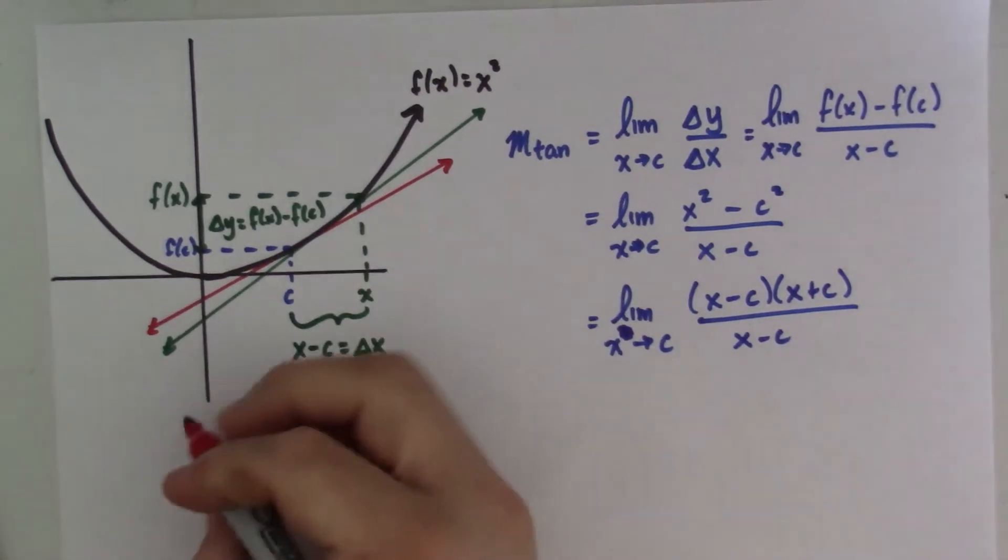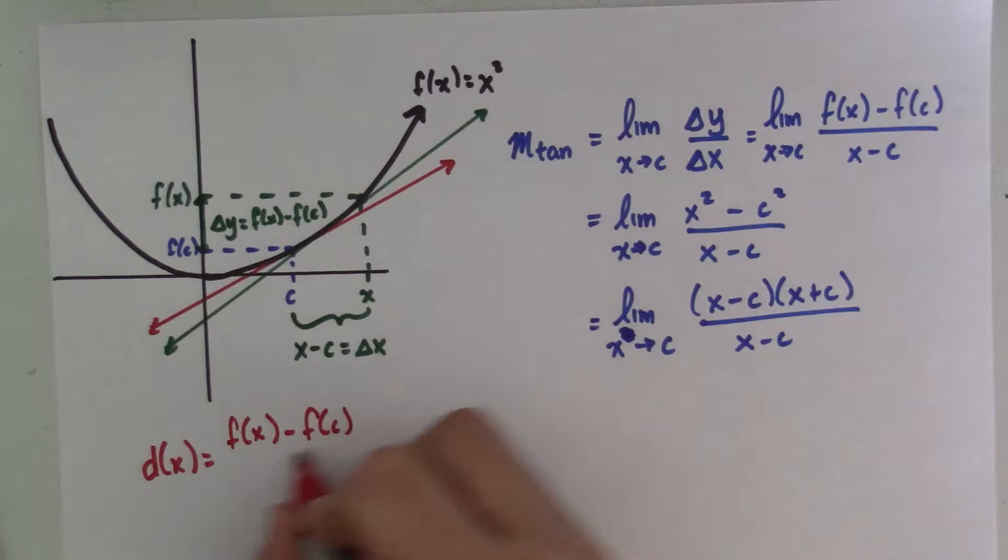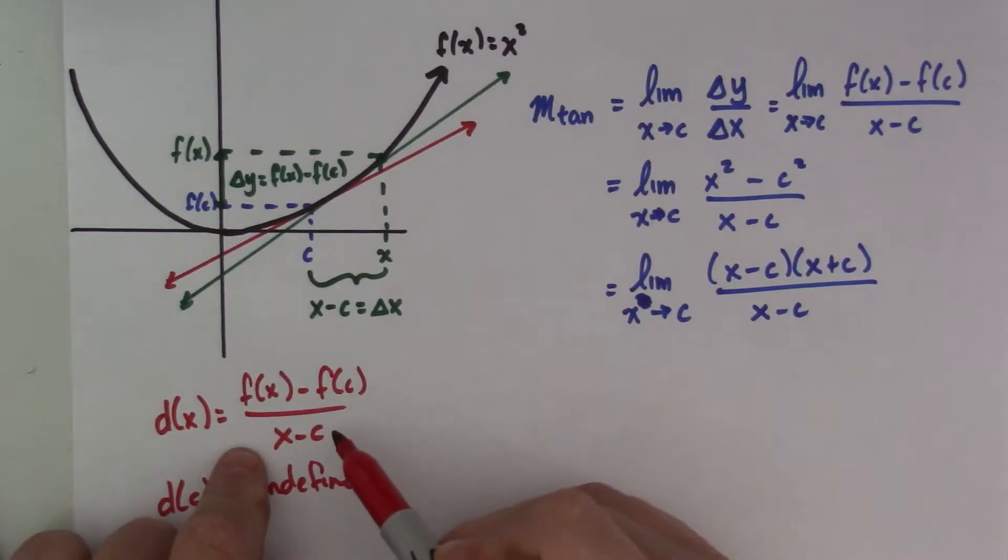And if we pretended that there was some function d of x, which is f of x minus f of c over x minus c, then d of c is undefined because that gives me zero in the denominator, and that's bad.